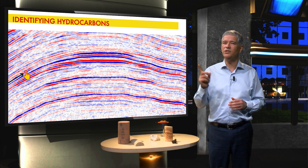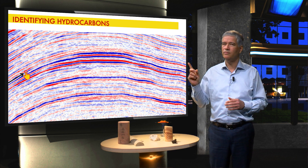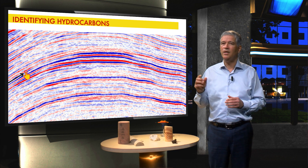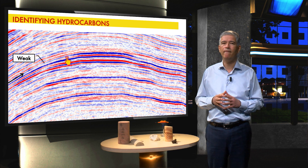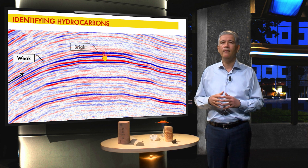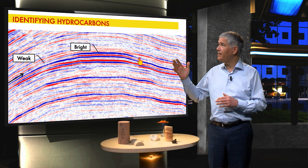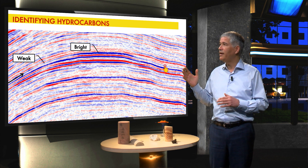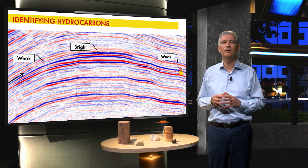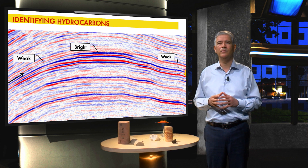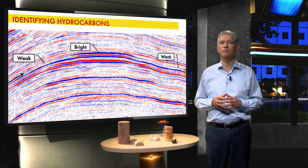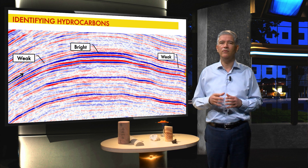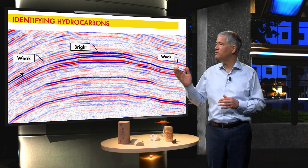Now let's follow this amplitude. It is weak over here, it is bright at the crest, and it is weak again — strong indications of hydrocarbons being present. The same is true for this second interval.